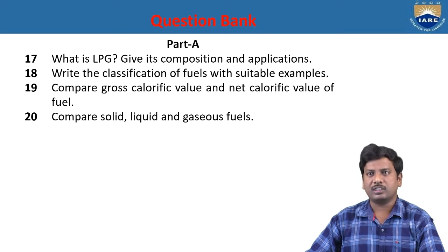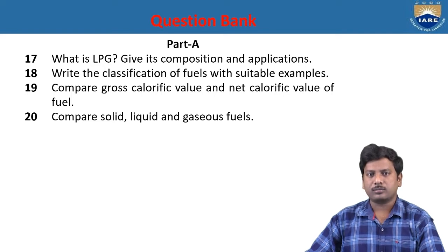Write the classification of fuels with suitable examples. Fuels are classified based on availability and physical state. Based on availability, they are classified into natural fuels (primary fuels) and secondary fuels. Natural fuels are obtained from nature — like coal, petroleum, and natural gas. Secondary fuels are derived from natural fuels: from coal we get coal gas; from petroleum, petrol and diesel; from natural gas, CNG and LPG.